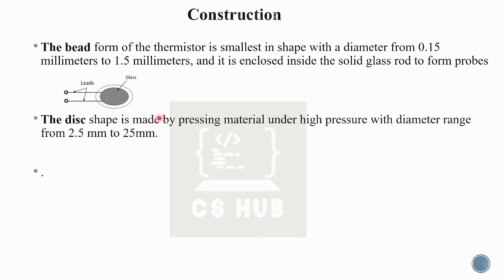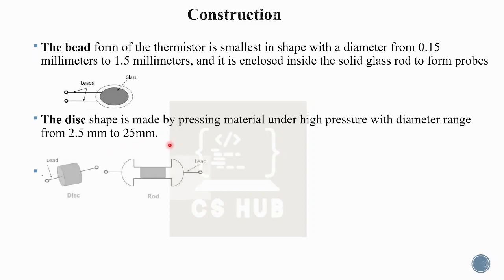The disc shape is formed by pressing material under high pressure, with a diameter ranging from 2.5 mm to 25 mm. There is also a rod shape.